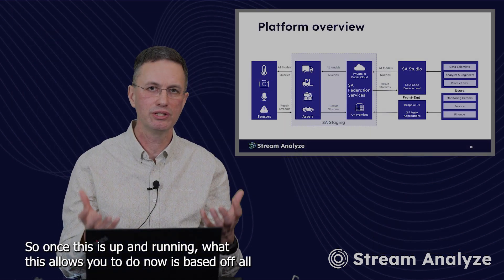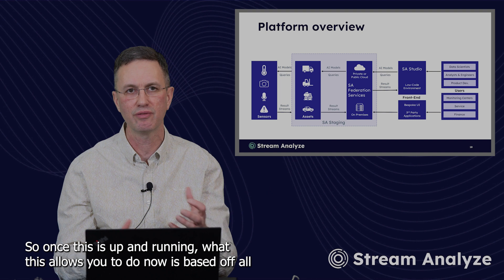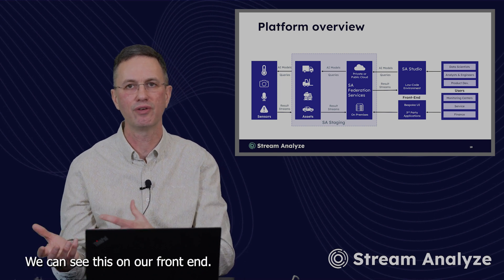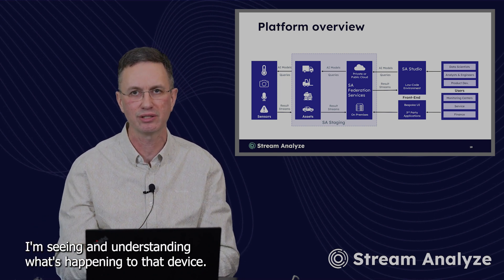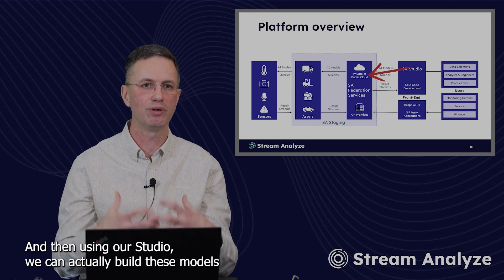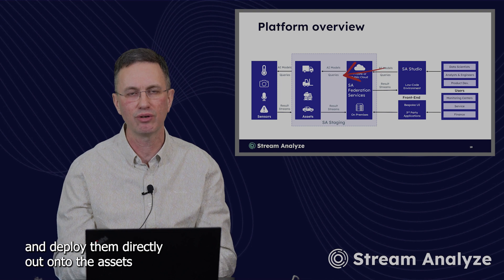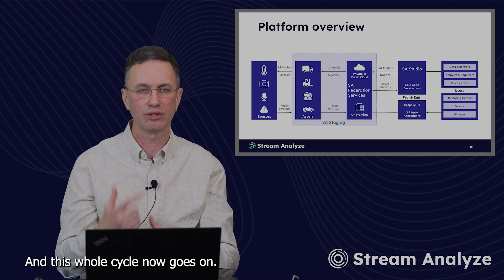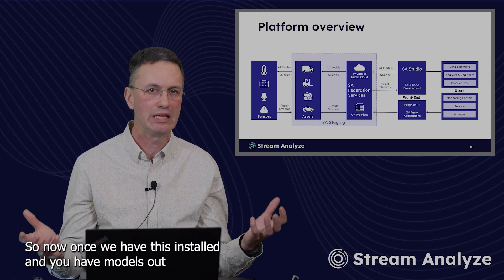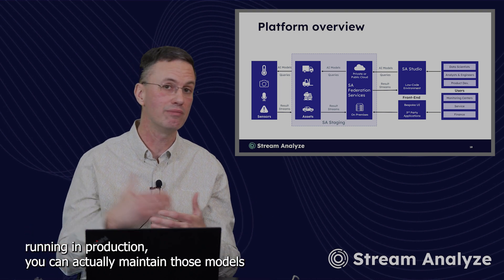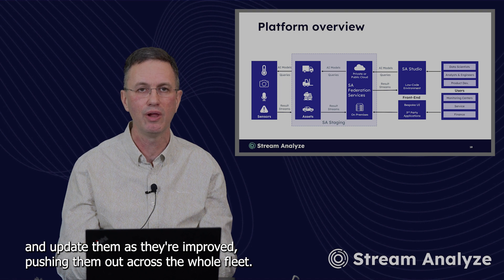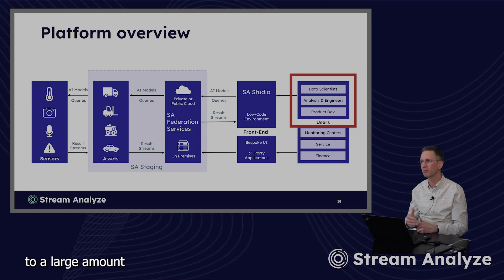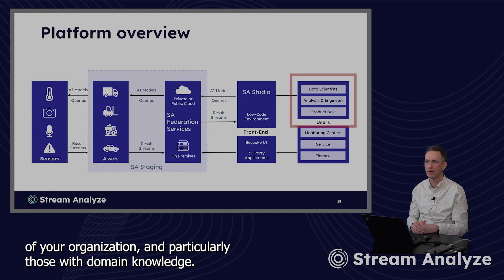So once this is up and running, what this allows you to do now is based on any sensor that is going on on that device or asset on the left, we can see this on our front end, seeing and understanding what's happening to that device. And then using our studio, we can actually build these models and deploy them directly out onto the assets instantaneously without having to do firmware updates. And this whole cycle now goes on. So once we have this installed and you have models out running in production, you can actually maintain those models and update them as they're improved, pushing them out across the whole fleet. And as you see on the right hand side, this can actually open up to a large amount of your organization and particularly those with domain knowledge.